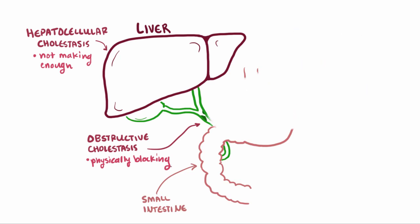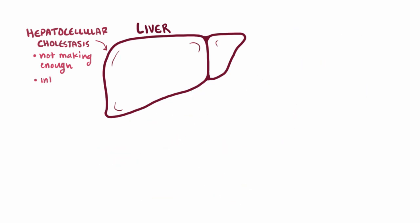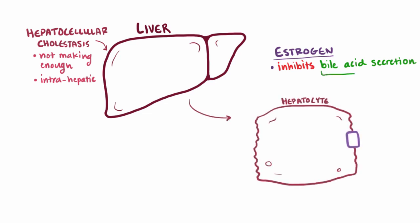For hepatocellular cholestasis, which would be considered a form of intrahepatic cholestasis since it's happening inside the liver, a really important culprit is the hormone estrogen. Estrogen is thought to cause the hepatocytes to not be able to pump out bile acids, usually in the form of cholic acid, which is produced when hepatocytes break down cholesterol.